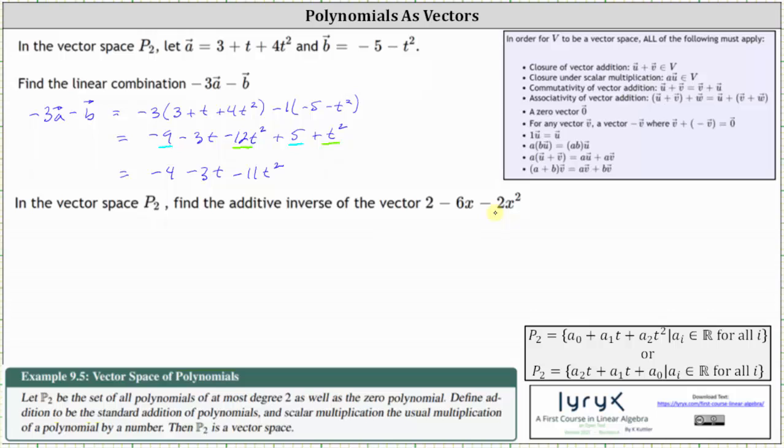This will be the vector or polynomial that we add to this vector or polynomial that will result in the zero vector or zero, which will be the opposite of 2 - 6x - 2x², which is equal to -2 + 6x + 2x².